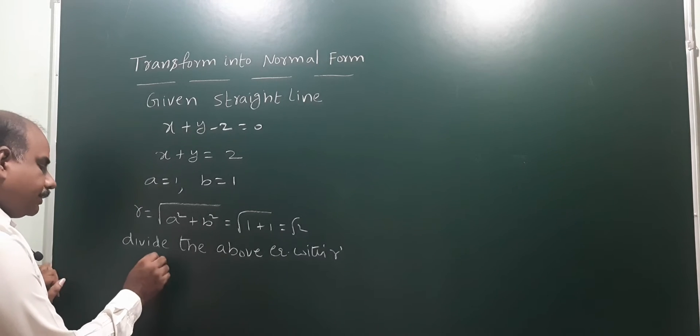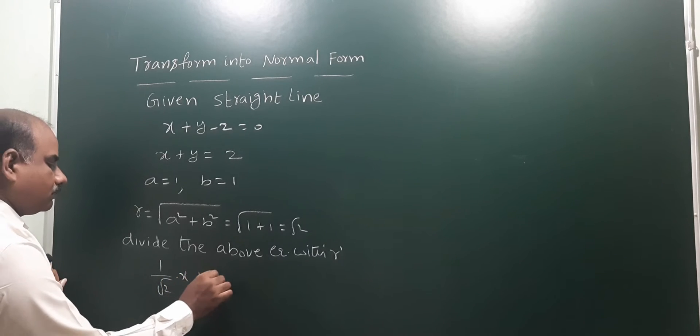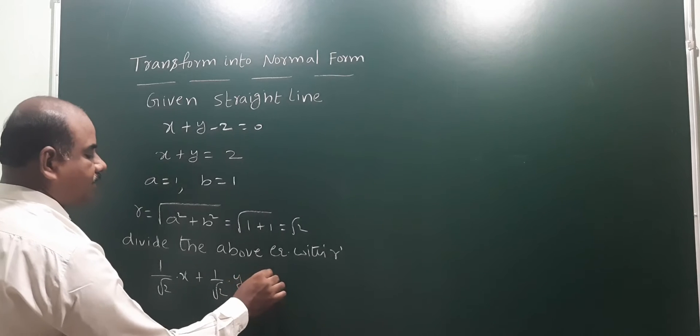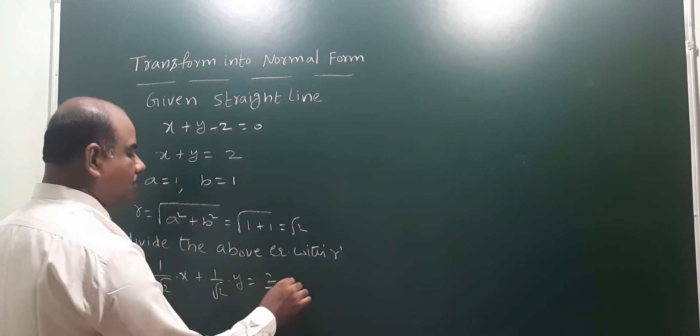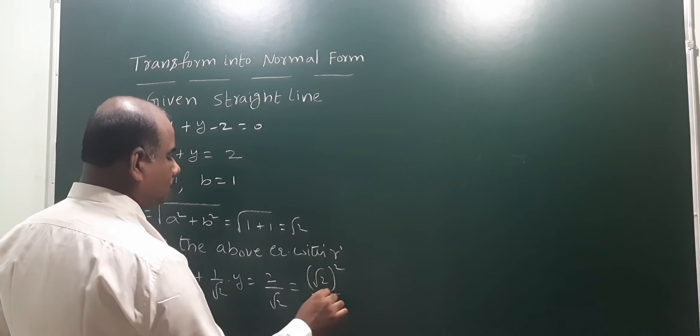So it becomes 1 by root 2 times x plus 1 by root 2 times y equals 2 by root 2. This 2 by root 2 can be written as root 2 squared by root 2, so root 2 cancels out and we get root 2.